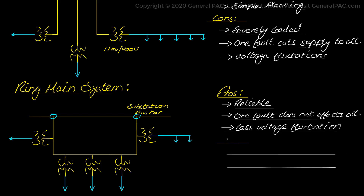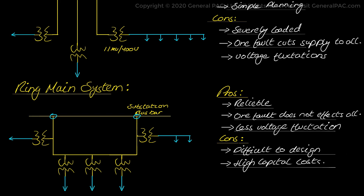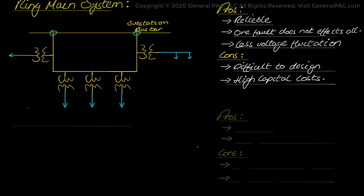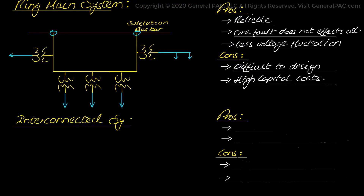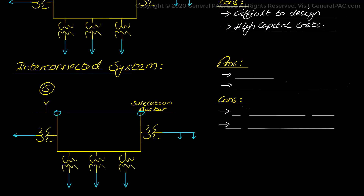Although the ring main system has advantages, it is difficult to design compared to the radial feeder, and it also has a very high capital cost due to the extra cable and layering. Thirdly, we have the interconnected system. When a feeder ring is energized by two or more generating stations or substations, the resulting formation is called an interconnected system.